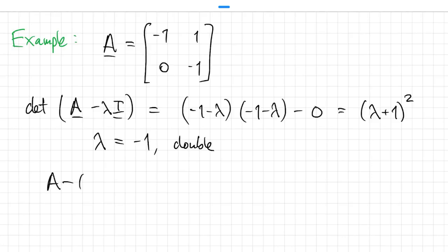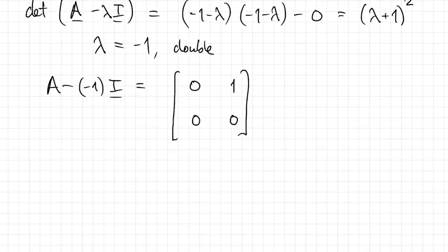That means that lambda equals negative 1 is a double eigenvalue. If we look for eigenvectors, we look at the null space of this matrix, A minus lambda I. The null space is spanned by just a single vector. So that is an eigenvector, but there's no second independent eigenvector defined.